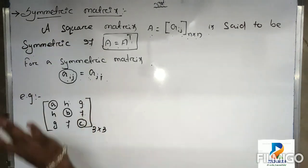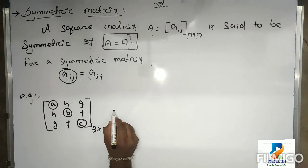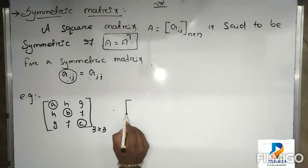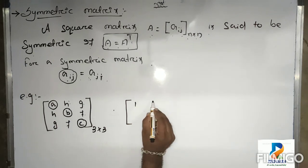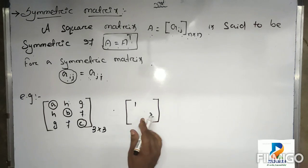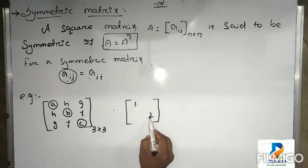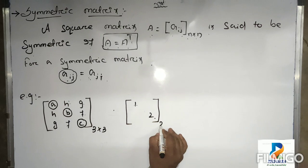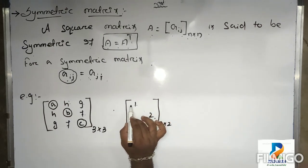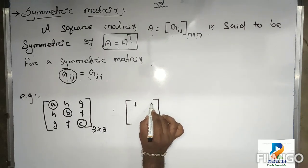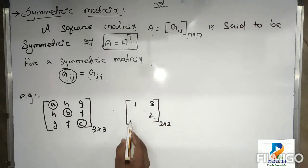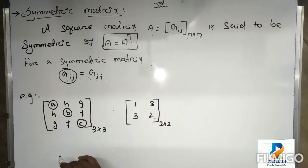Similarly, if we take a 2×2 matrix, remember students the diagonal elements remain the same — a11 and a22 stay the same. The off-diagonal elements satisfy a12 equal to a21. So if we take a12 as 3, then a21 is also 3.